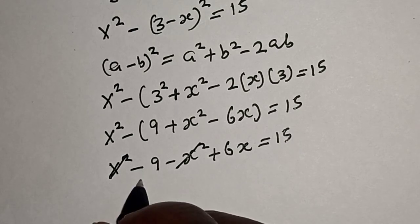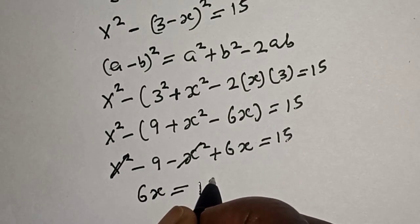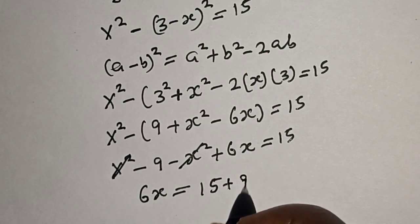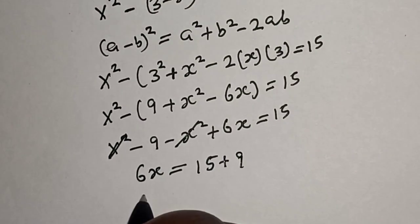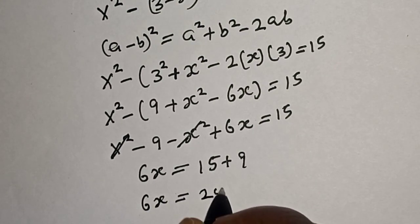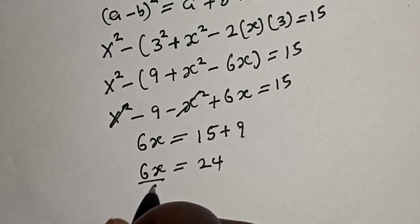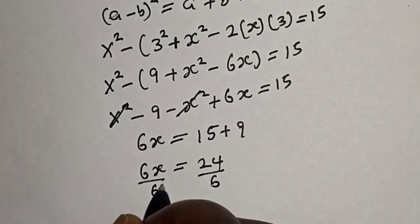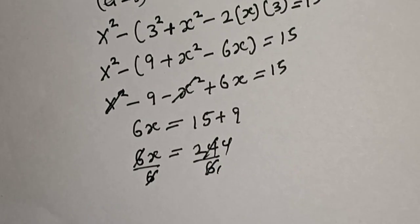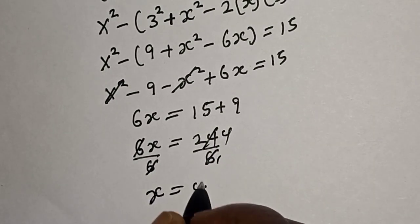Simplifying, s squared minus 9 minus s squared plus 6x is equal to 15, so 6x is equal to 15 plus 9, which gives 6x is equal to 24. Dividing both sides by 6, s is equal to 4.